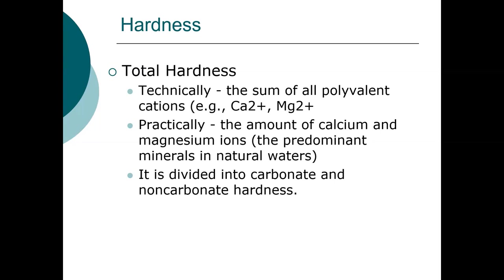Total hardness is the sum of all polyvalent cations, including calcium²⁺, magnesium²⁺, iron²⁺, and iron³⁺ — it does not include ions like sodium. For all practical purposes, the most common polyvalent ions you will find in these waters are calcium and magnesium. We also divide hardness into carbonate hardness — that portion associated with alkalinity — and non-carbonate hardness, which is that portion associated with ions other than carbonate and bicarbonate species.